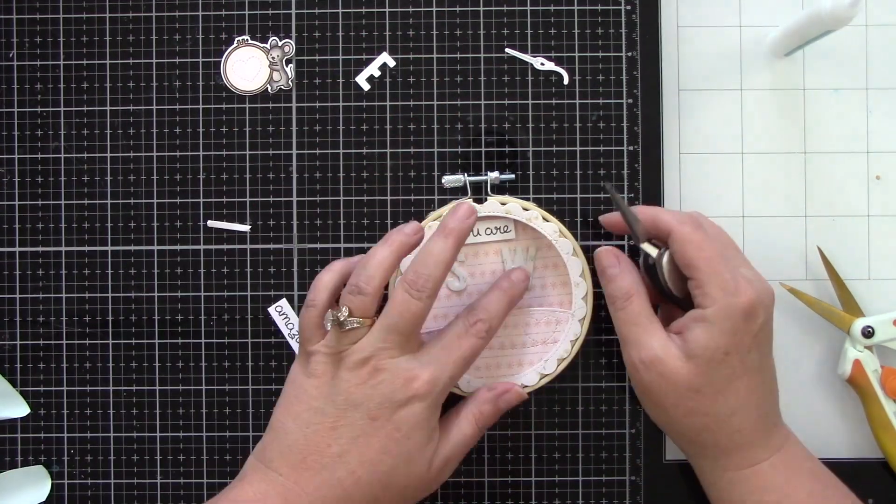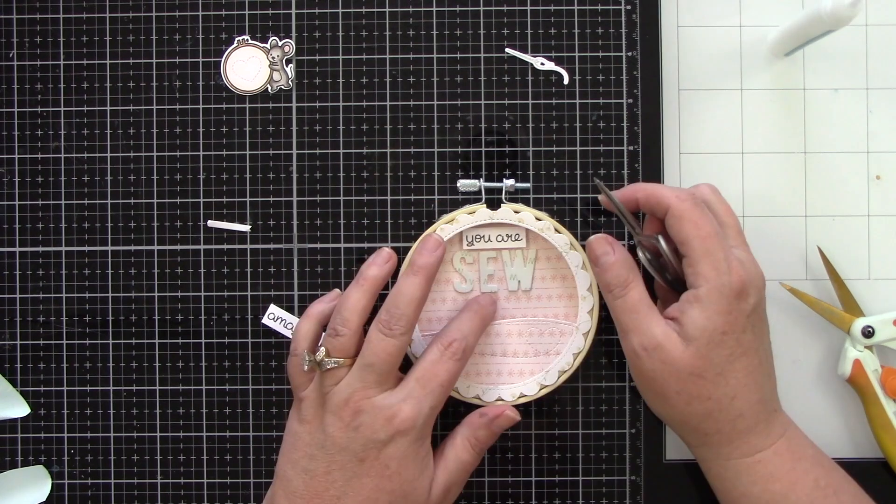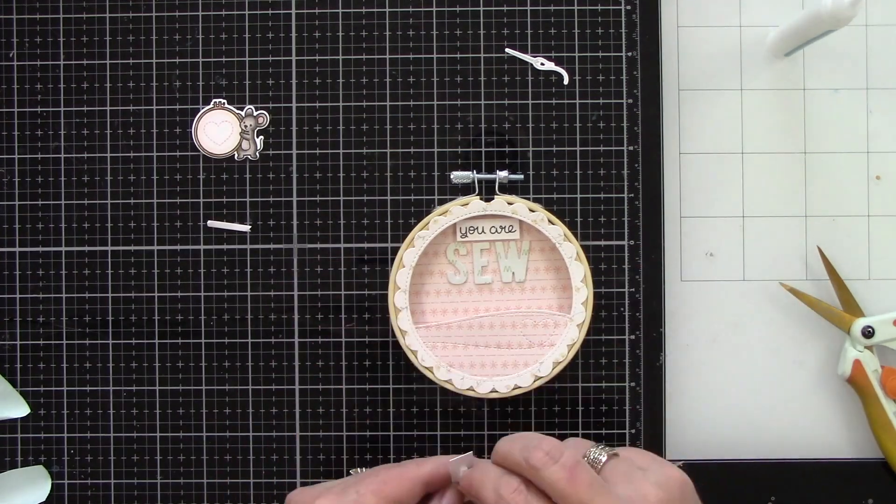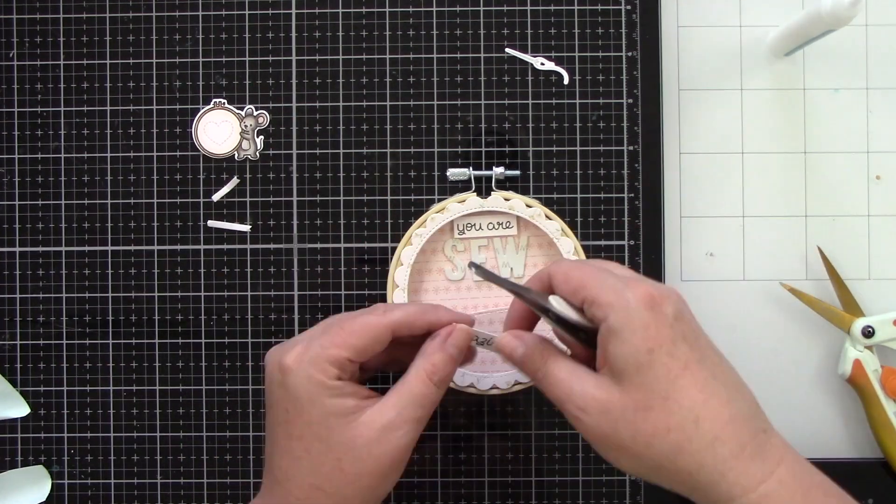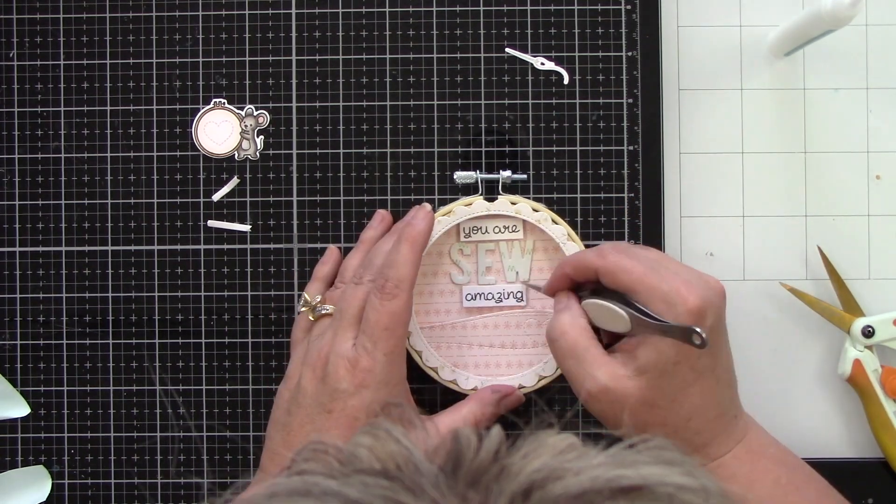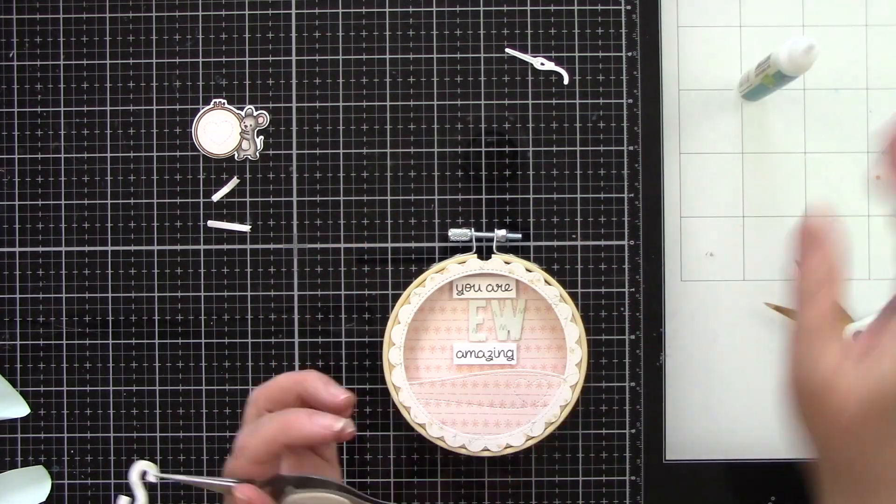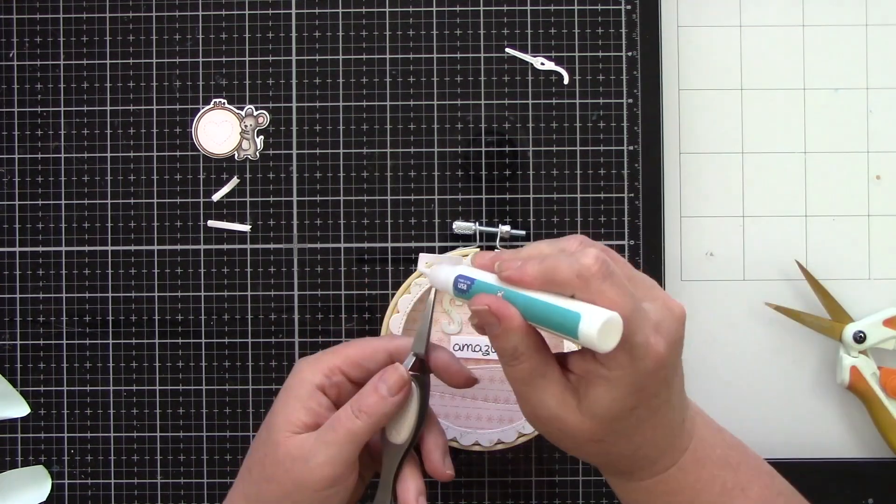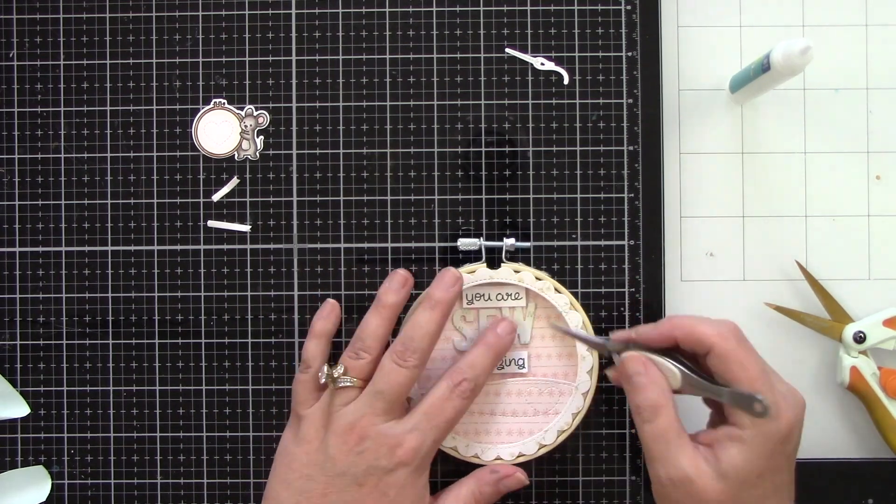I have foam tape behind both of my sentiments and I want to get everything nice and lined up. So I want to lay everything out. I want to make sure that that little front piece is not going to be hiding the word amazing. So I'm adhering down the you are and amazing just lightly. I did peel the release paper off of the foam tape. Then I can glue down the word sew. And what was perfect on this cardstock is there's already straight lines on it. So it made it really easy to line everything up nice and straight.